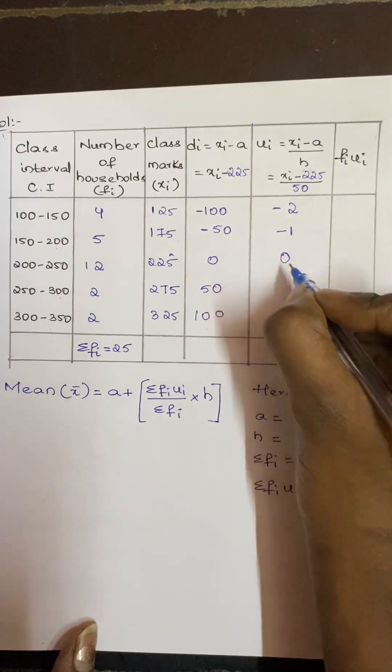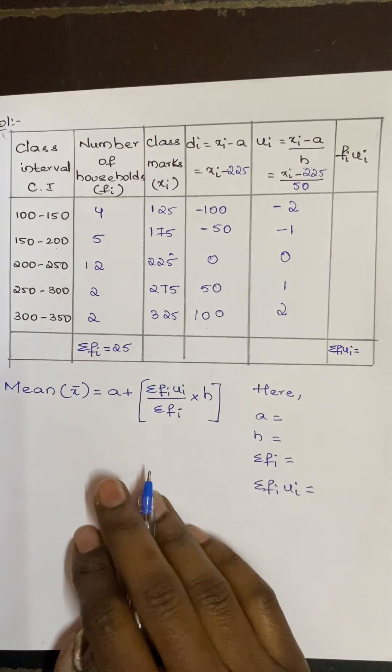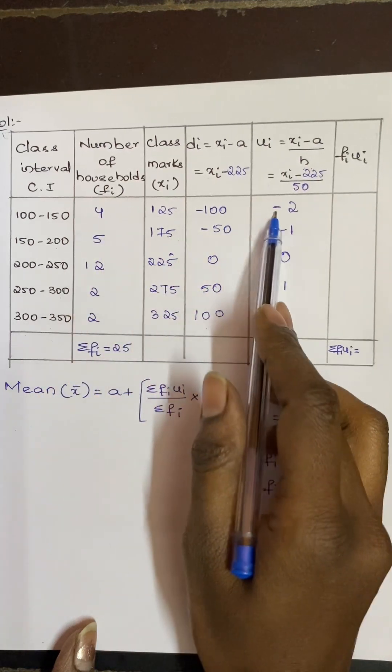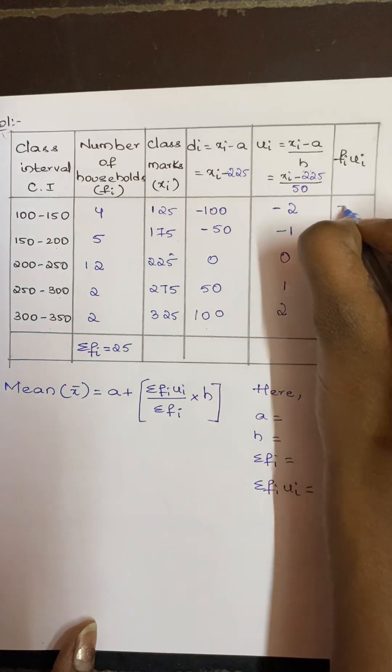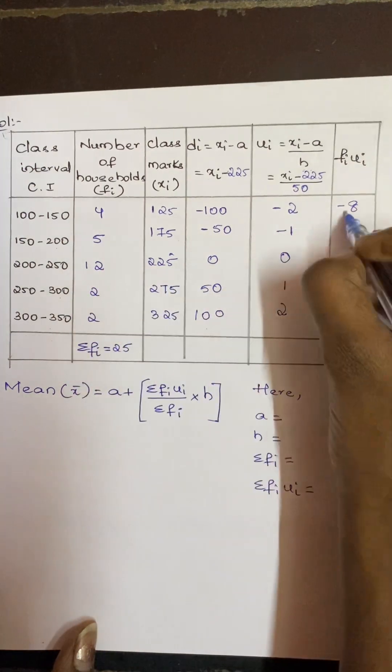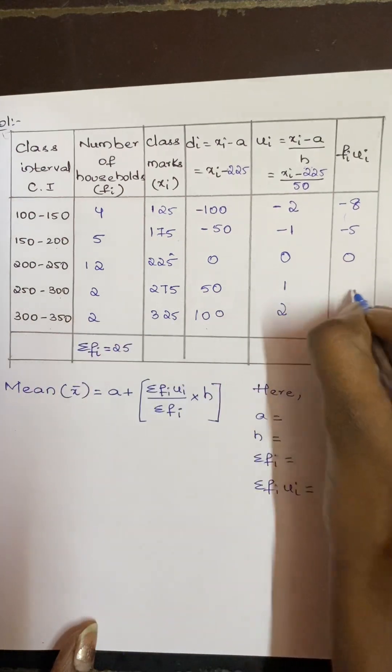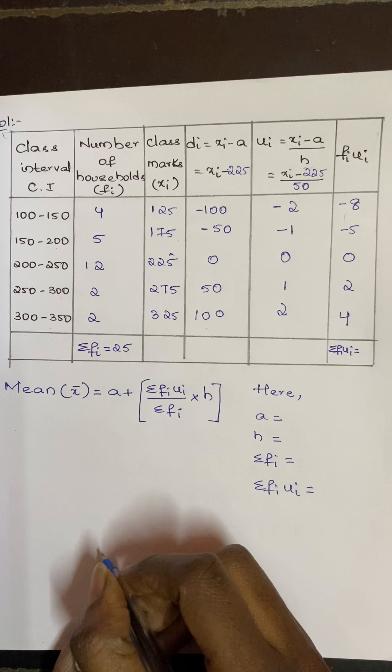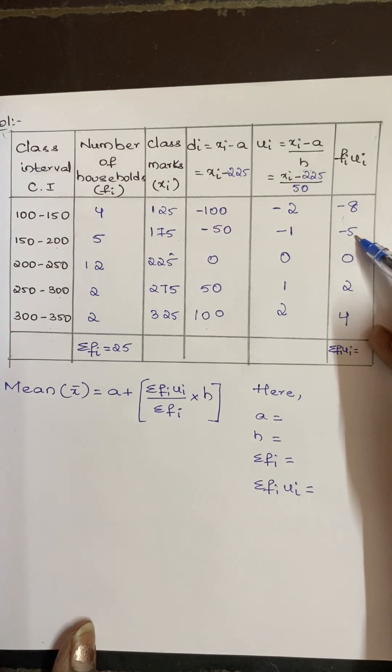Now fi·ui: what is fi? 4. ui is 2. 4 twos are 8, so minus 8. 5 ones are 5, minus 5. 12 zeros are 0. 2 ones are 2. 2 twos are 4.